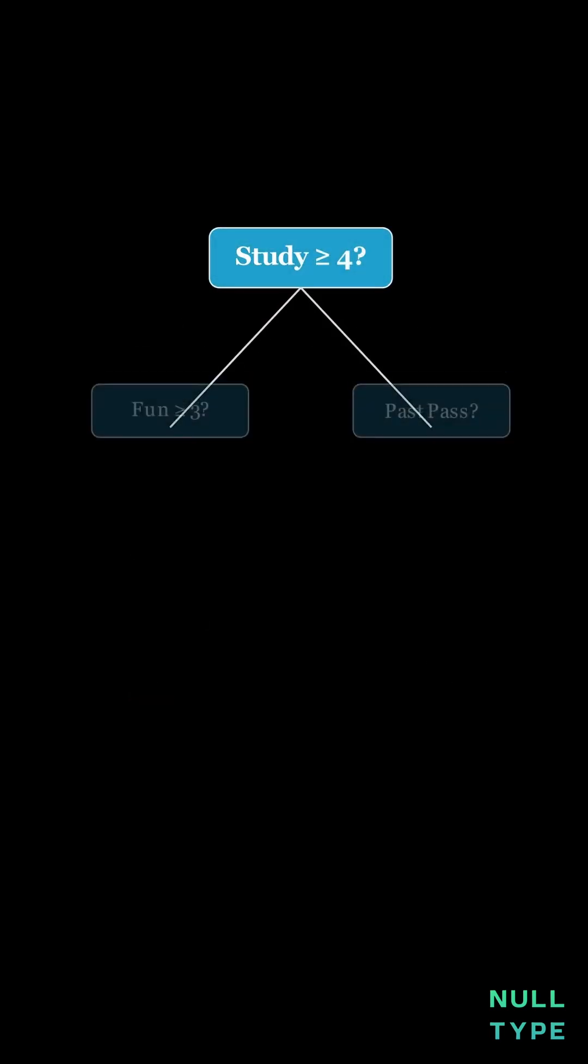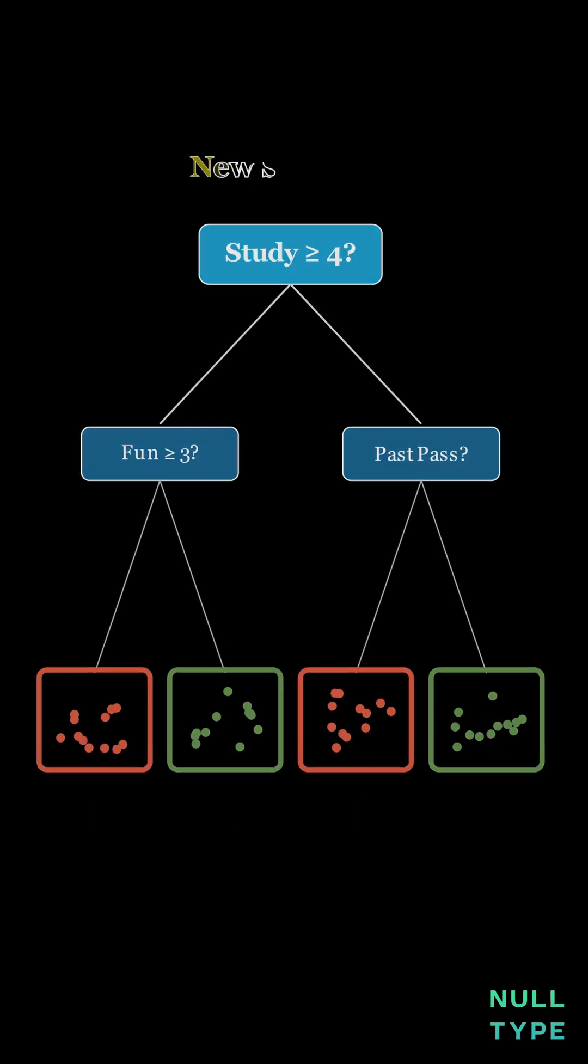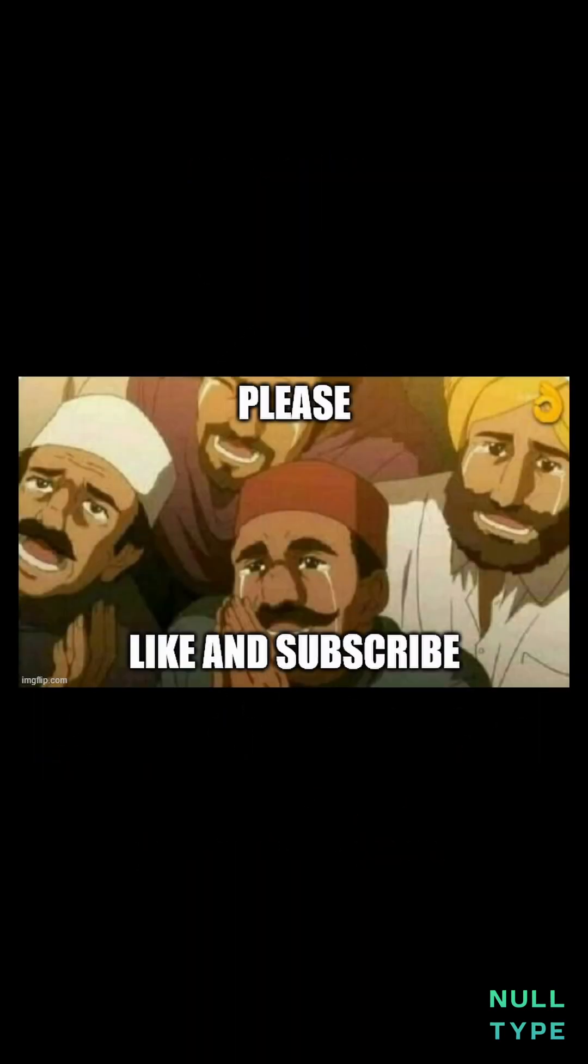Now the tree repeats the same idea at each level. Splitting with the next best question until each leaf is mostly one color. To predict for a new student, follow the tree and reach a leaf node. Green means pass, red means fail. If you like this, subscribe for more.